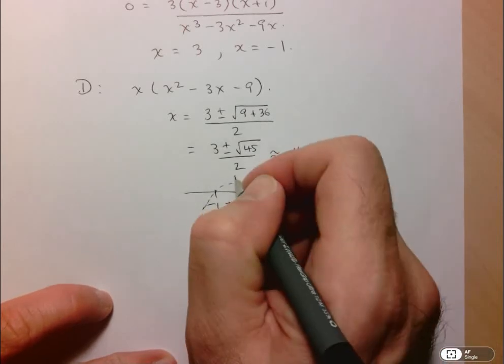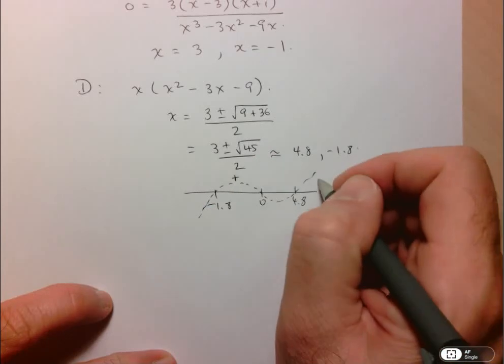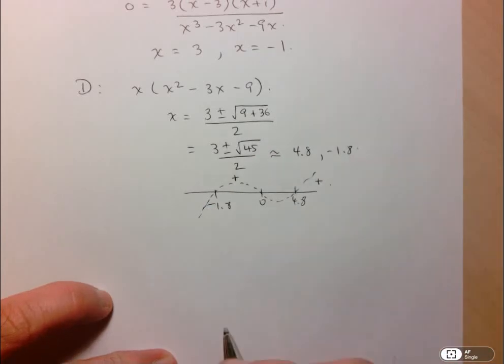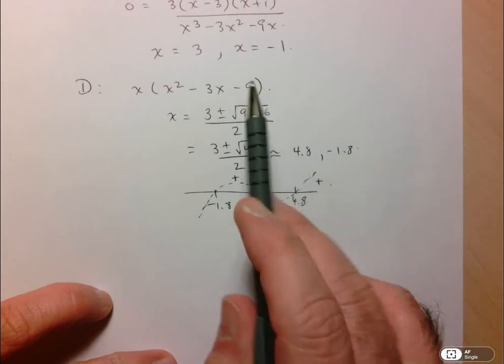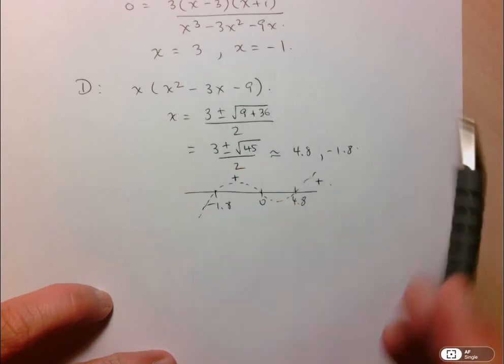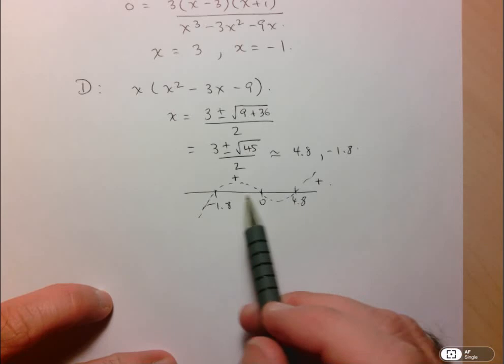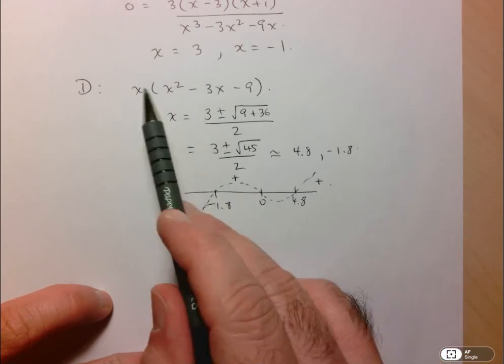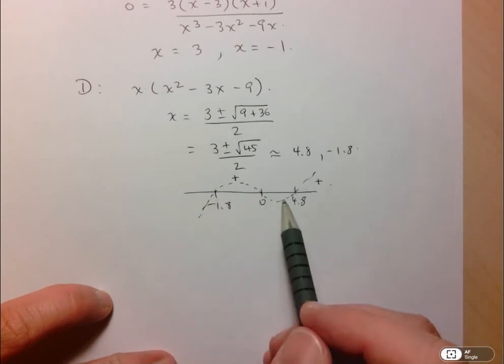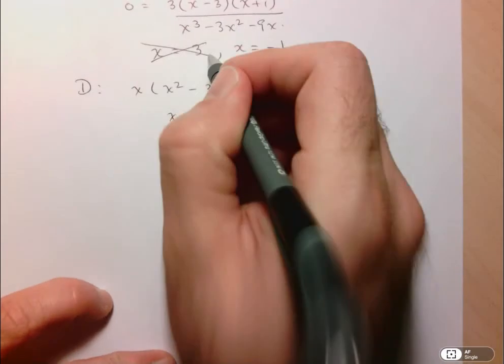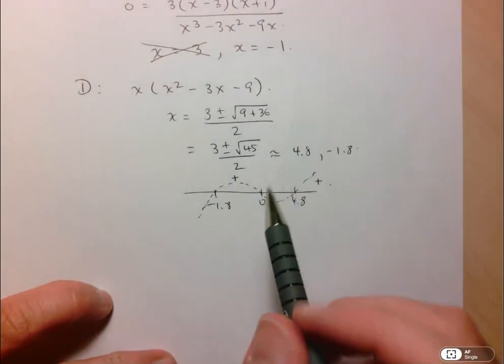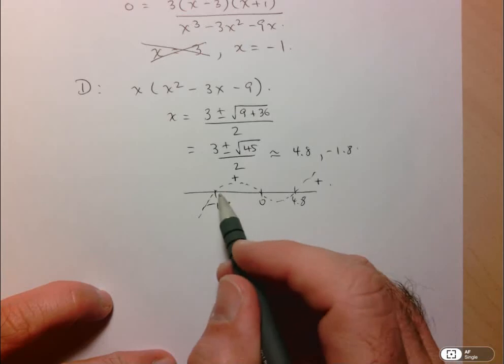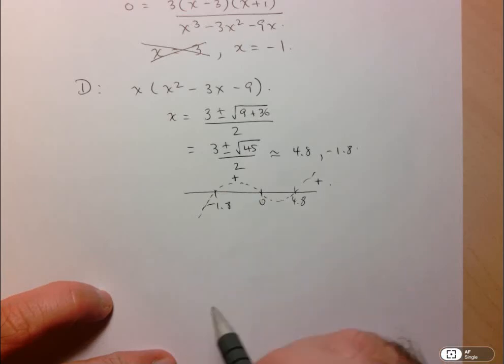So it's only positive in this interval and then greater than 4.8. And I notice here that our first value, 3, is not going to be in the domain of the function. Because this expression here is going to be negative when x is equal to 3. So I have to eliminate this possibility. Whereas x equals negative 1 is in the domain of the function, because the input is positive there.